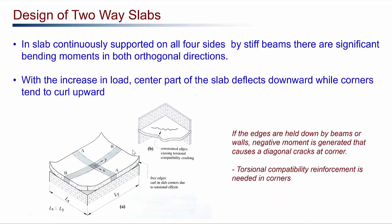As we keep increasing the load, the center part of the slab will deflect downward, which means the corners of the slab will tend to curl upward. If these corners are unrestrained, that's fine. But if the corners are restrained against this uplift, then we can have cracks in the corners. Therefore, for the two-way slab, apart from the flexural reinforcement in x and y directions, we will also have to provide torsional reinforcement in the corners.